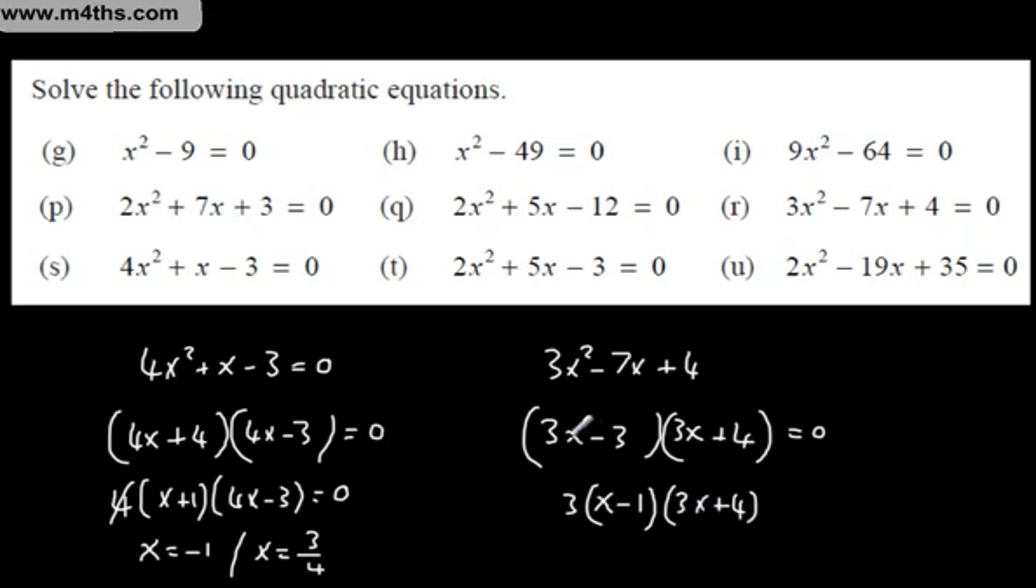Even if you hadn't done that, you can still solve them without bringing that factor up. If 3x - 3 = 0, then 3x = 3 and x = 1. So x = 1 or x = -4 thirds. That's solving as well. So we've factored and solved these.